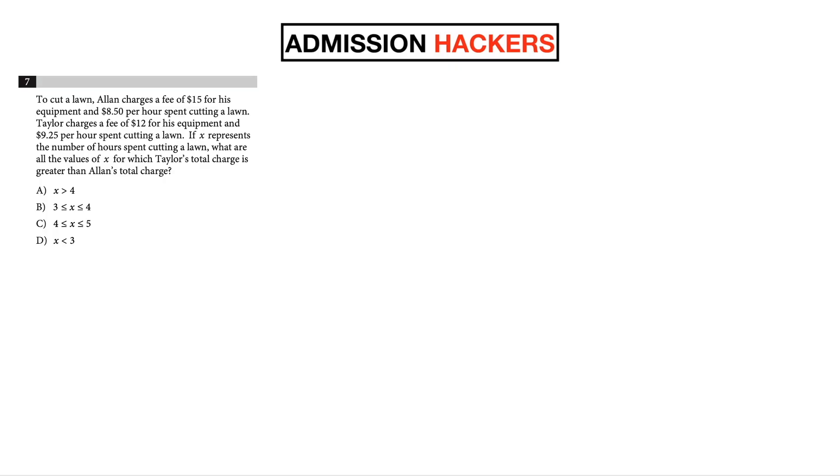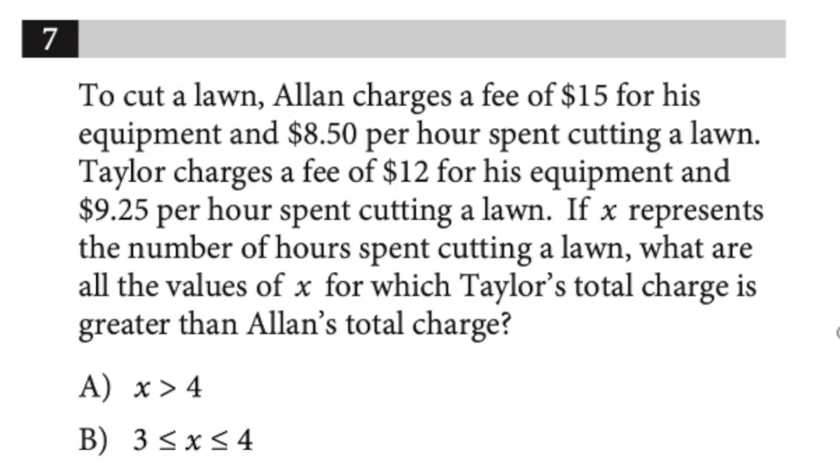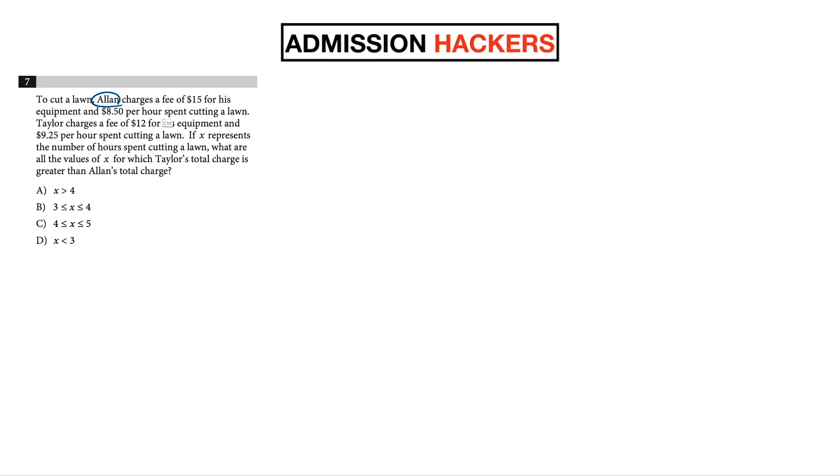So let's take a look at this question. The question says to cut a lawn, Alan charges $15 for his equipment and $8.50 per hour spent cutting the lawn. And Taylor charges $12 per hour and $9.25 per hour for cutting the lawn. So if X represents the number of hours spent cutting a lawn, what are the values of X for which Taylor's total charge is greater than Alan's charge? So take a second, think about what that means.